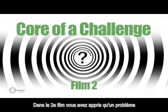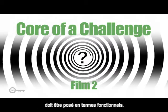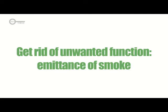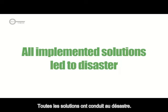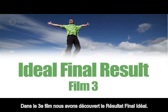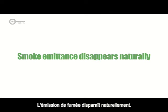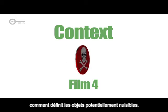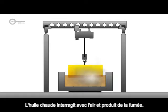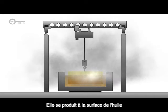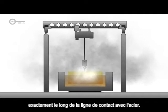In the second film, you learnt that problem definition should be done in functional terms. Our challenge is to get rid of the unwanted function: emittance of smoke. All implemented solutions led to disaster, so we can't learn from those failed solutions. In the third film, we learnt about the ideal final result: smoke emittance disappears naturally. Using what we learnt in film 4, we define objects that produce harmful effects. Hot oil interacts with air and produces smoke. Then we localise the harmful action — this happens only on the surface of the oil, exactly along the line of its contact with hot metal.